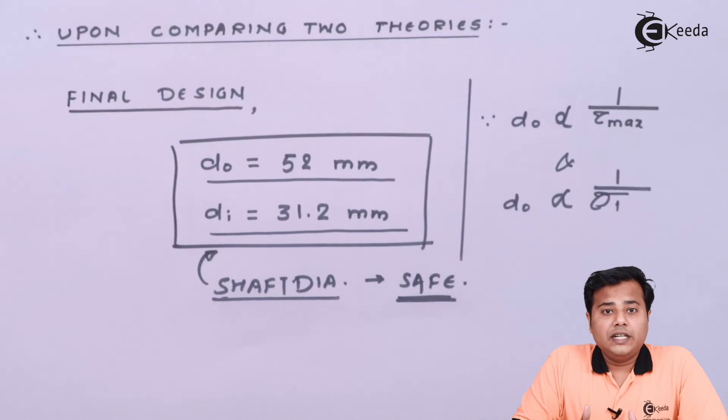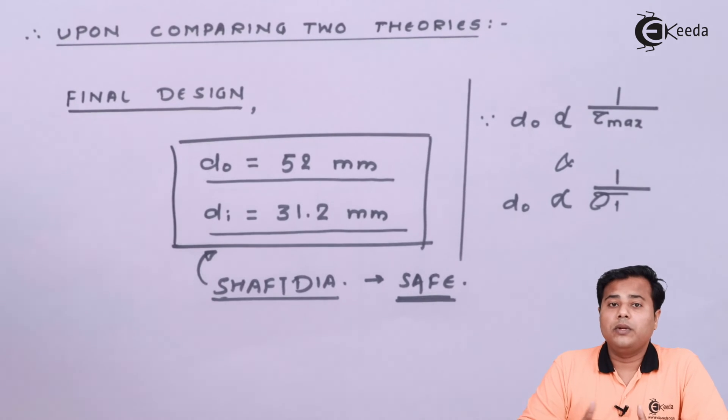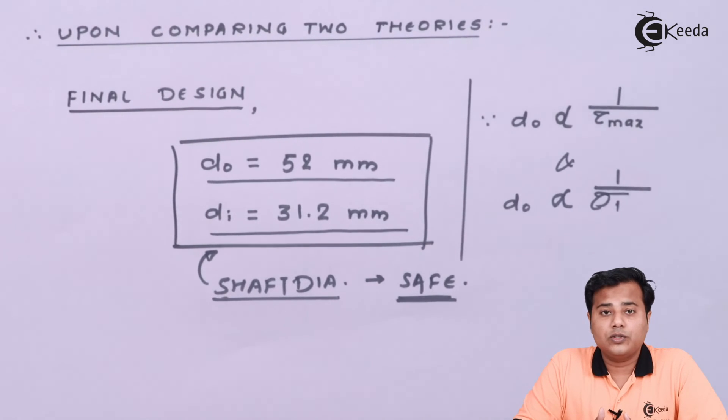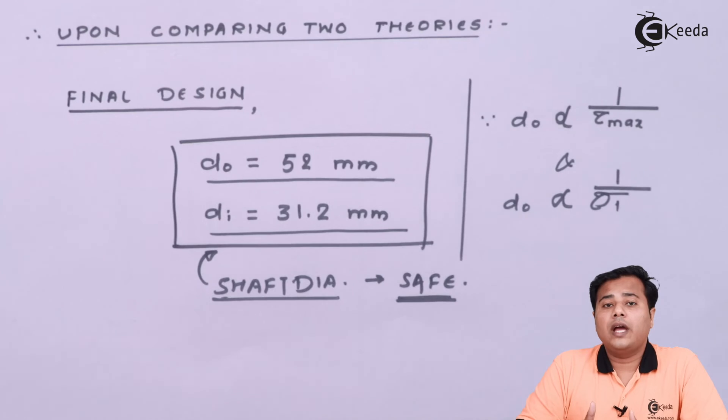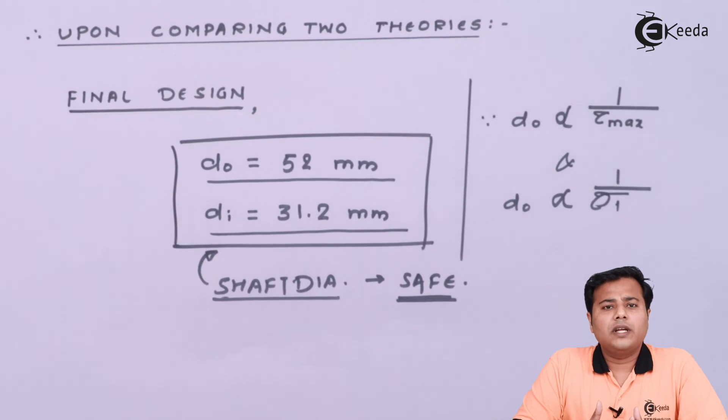If there was a condition which was describing the rigidity also we would have continued this problem to solve the rigidity concept also. And then accordingly we could have three sets of inner diameter and outer diameter which upon comparison we would have selected for the final solution.